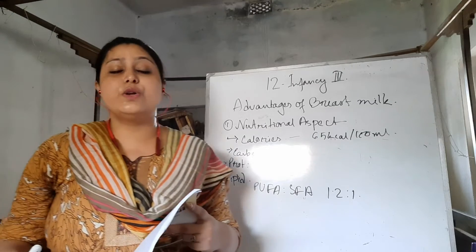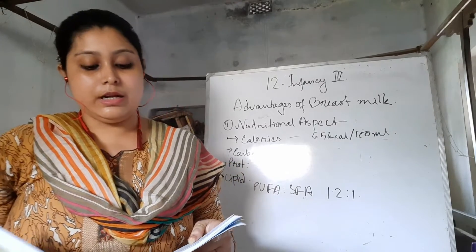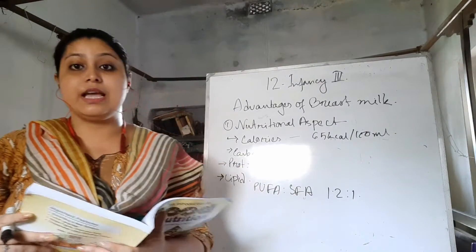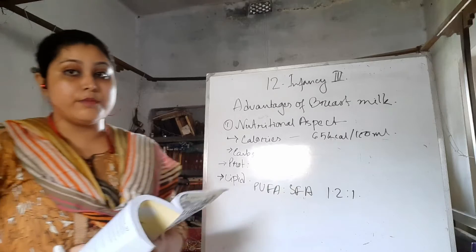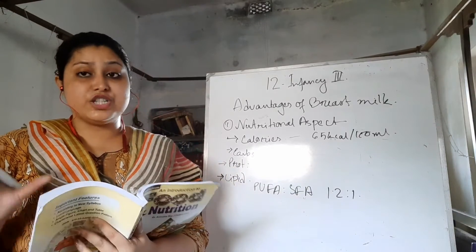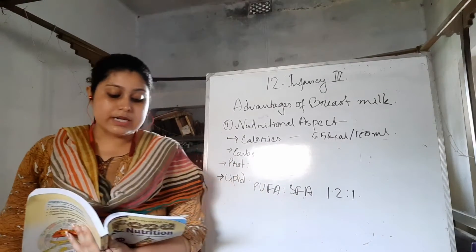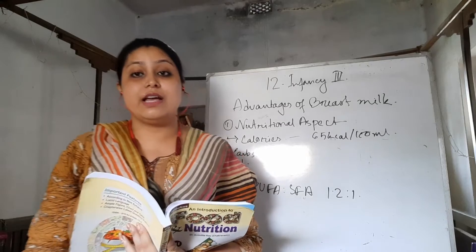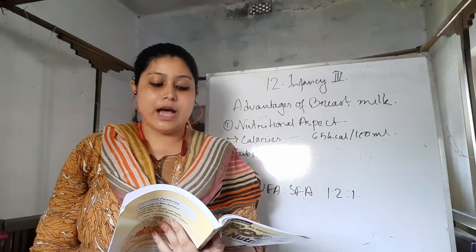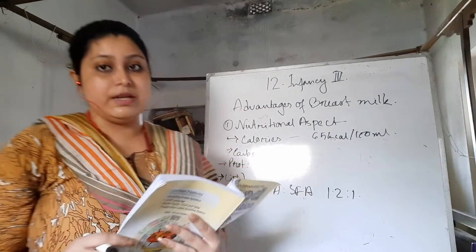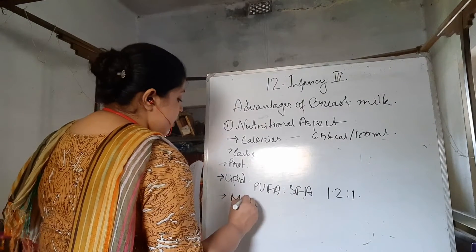Next, minerals. The calcium to phosphorus ratio is 1.2 to 2. Low sodium content does not create a load on the kidney. Iron is also present, which is important for blood formation as the child's body is growing. The copper to zinc ratio is 1 to 5, since zinc is needed for immunoglobulin functions. The bioavailability of copper, cobalt, iron, and zinc are all very high in breast milk and can be easily absorbed and assimilated.